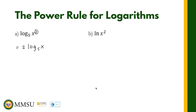The same is true with this one — the exponent now becomes the coefficient, so we have 2 ln of x. That's how we use the power rule; it's pretty easy. For the next videos, I am going to talk about expanding logarithms or condensing logarithms.